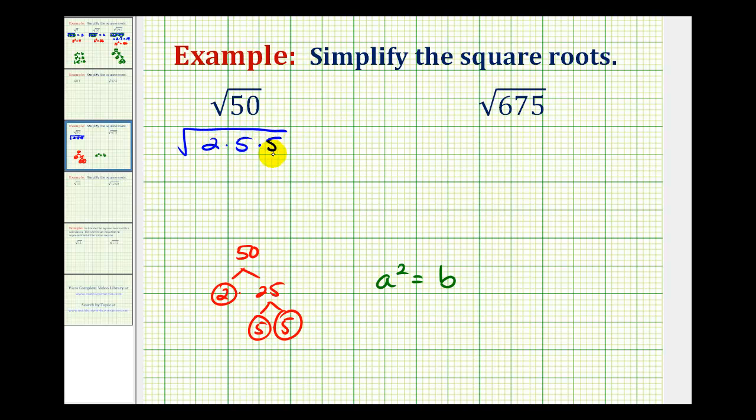Well anytime we have two equal factors, we have a perfect square factor. So here's a perfect square factor, so this can simplify. And the square root of 5 times 5 is equal to one factor of 5. So we have one factor of 5 times the remaining square root, which is square root 2.